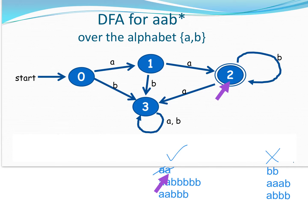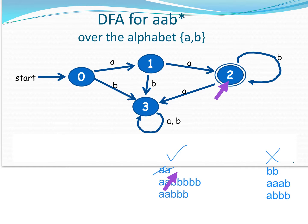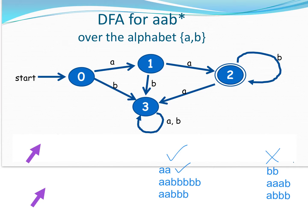Now we move on to the second letter A. I'm at state one, and if I see an A I continue on and end up at state two. At this point we look at our string and say we've finished the string. Where am I in the DFA? I'm at state two. State two happens to have a fancy double circle, and if I have a double circle that means accept — so yes, this string is in my language.